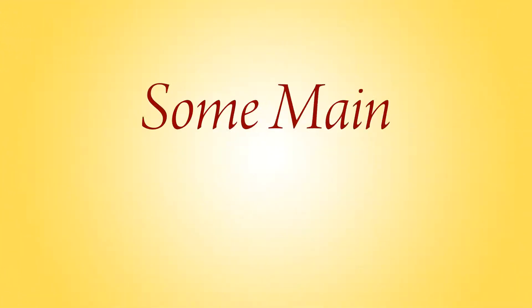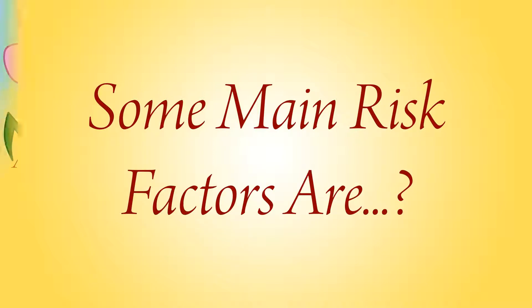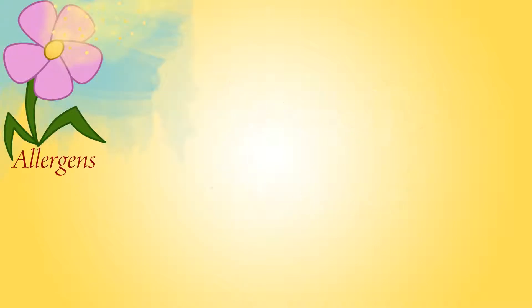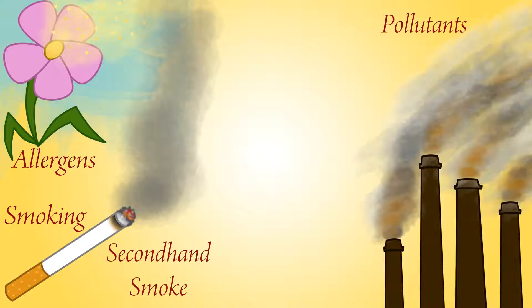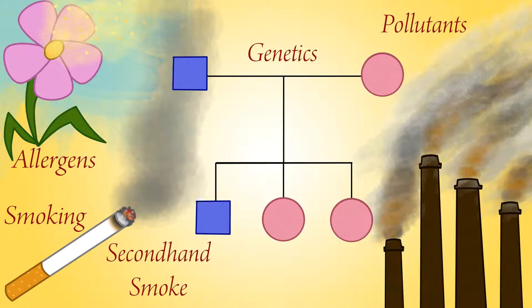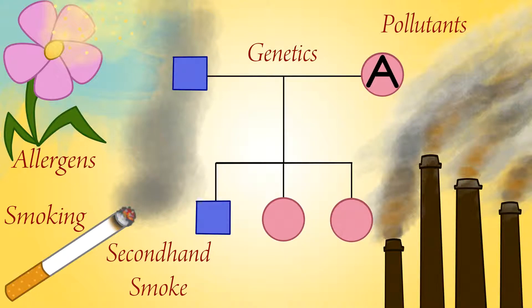Some of the main risk factors that can lead to asthma are: allergies, smoking, and exposure to second-hand smoke, and exposure to allergen proteins — as all of these can act as triggers for an asthmatic response. Asthma can also be genetically linked; if you have a parent with asthma, you are three to six times more likely to have asthma as well.